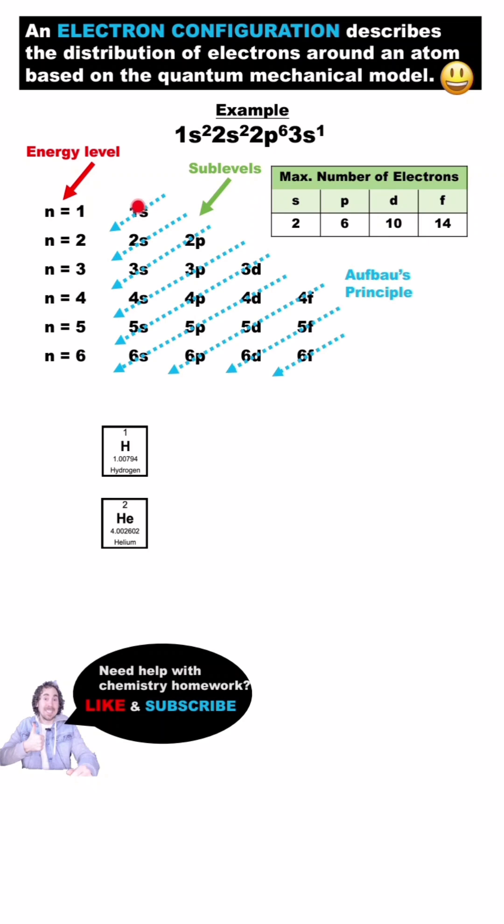When adding electrons, go in order from the lowest to highest energy. I remember the order using this tool. Follow the arrow starting at the top, working your way down. The number of electrons is equal to the atomic number of an element. Hydrogen has one and helium has two electrons. We'll start at the lowest energy sublevel, the 1s.